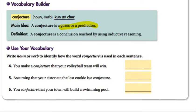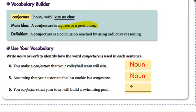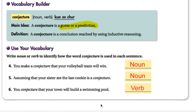Using our vocabulary word of a conjecture, we want to tell whether it's being used as a noun or a verb. Number four says you make a conjecture that your volleyball team will win. Whenever you see a conjecture where it's used as a person, place, or thing, that's a noun. Number five, assuming your sister ate the last cookie is a conjecture. Again, it says a conjecture, that's a noun. Number six, you conjecture that your town will build a swimming pool. That one's showing action because it's something that you are doing, and that one is a verb.